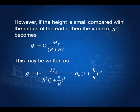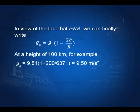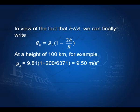At a height of 100 kilometers, for example, g_h equals 9.81 times (1 − 200/6371), which gives 9.50 meters per second squared, where 6371 kilometers is the radius of the earth.